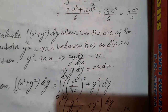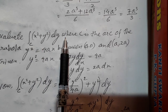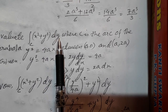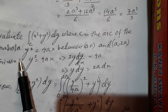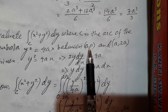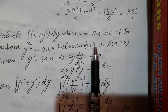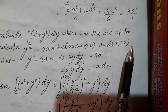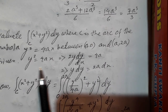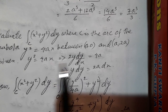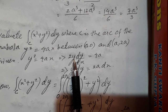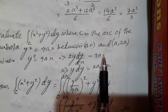In this equation, we also have the same function, but now we have dy instead of dx. We are integrating along the same curve y squared equal to 4ax, between (0,0) and (8, 2a). So I take the parabola y squared equal to 4ax and differentiate it. Differentiating gives us 2y dy/dx equal to 4a.